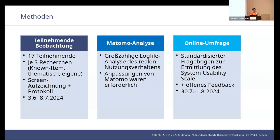Then we had an online survey using a standardized questionnaire to determine the System Usability Scale. This standardized questionnaire included 10 identical questions such as 'I found the system easy to use,' with a rating system from one to five — from 'I fully agree' to 'I do not agree at all.' There was also an option to collect qualitative data through a free text field for open feedback.